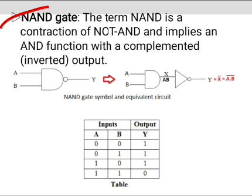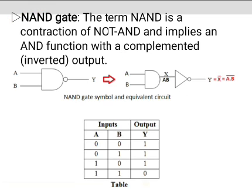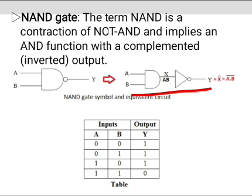Next is the NAND gate. The NAND gate is a universal gate. The term NAND is a contraction of NOT AND, implying an AND function with a complemented (inverted) output. This is the logical symbol of the NAND gate, and this is its equivalent circuit, where the input of the NOT gate is connected to the output of the AND gate.